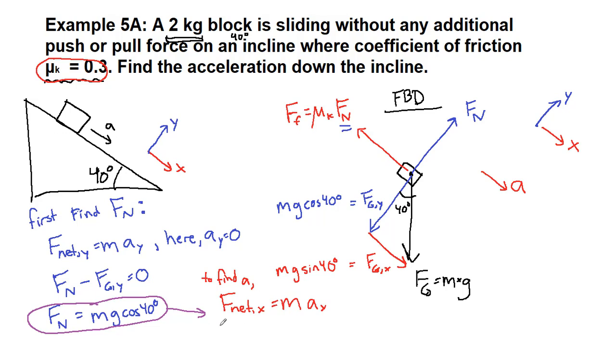So we are sliding downhill, which means the force of gravity in the x direction is in the direction of acceleration, and friction is opposite the direction of acceleration.